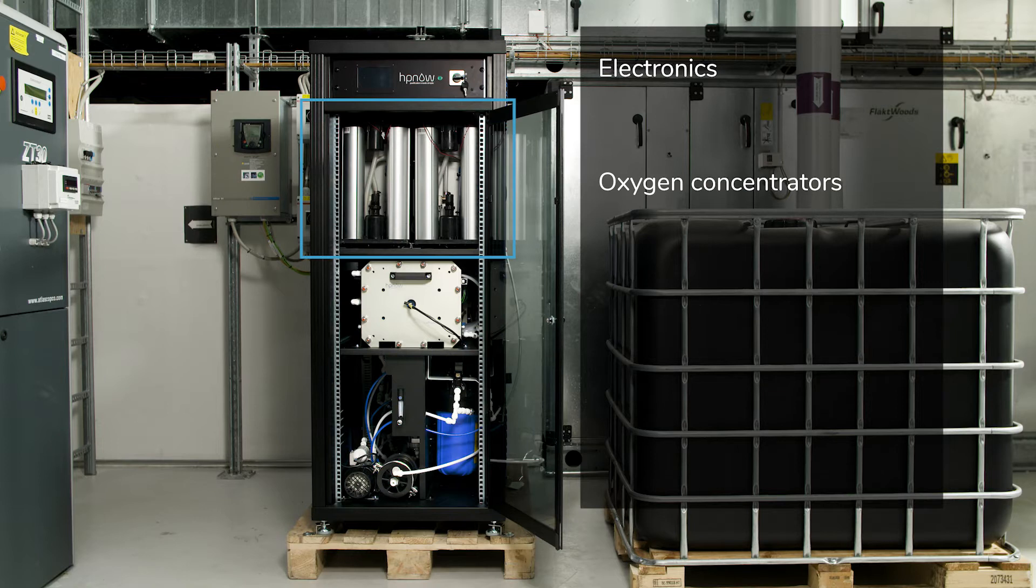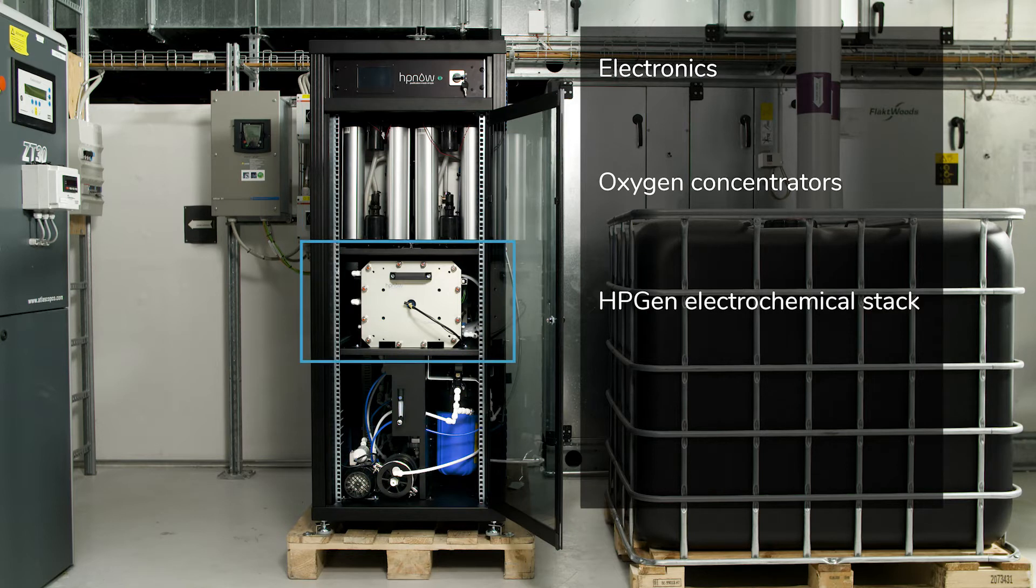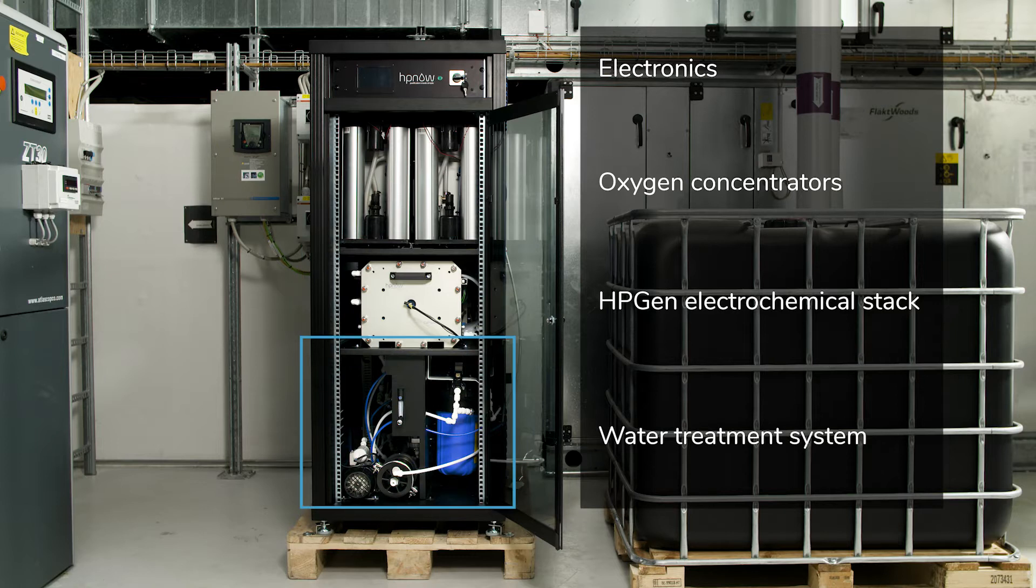Below the drawer are oxygen concentrators for oxygen delivery to the electrochemical cells. Underneath is the electrochemical stack, which combines water, oxygen, and electricity to produce the peroxide ultra-pure solution. Finally, in the bottom, a water pre-treatment system supplies deionized water to the electrochemical stack.